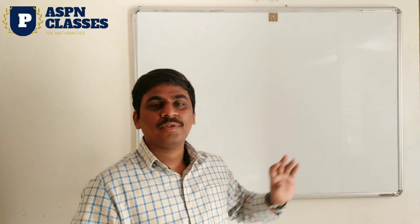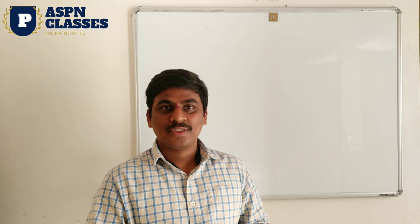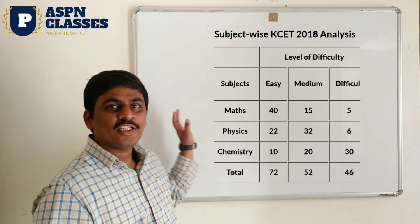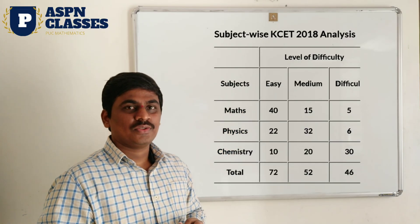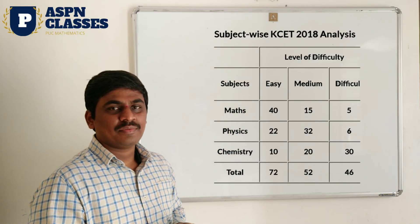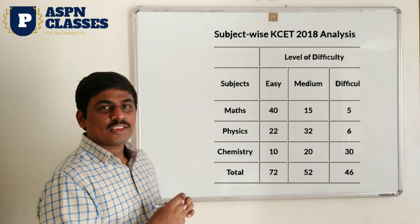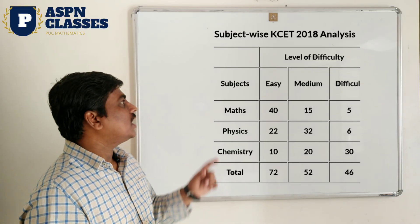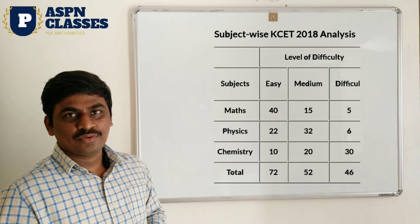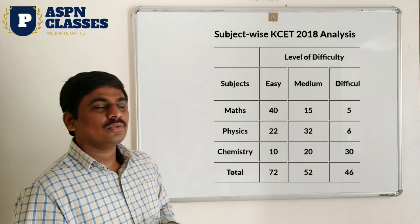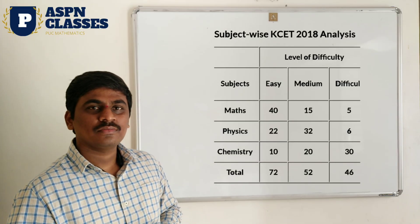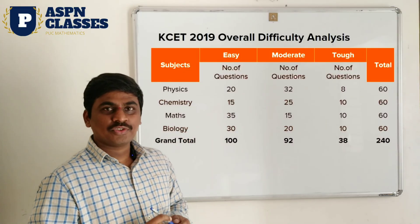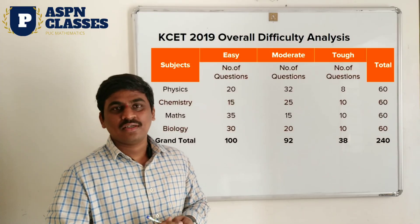Karnataka CET in 2018 and 2019: yes, questions are simple and easy, and some questions are easy and difficult. In 2018, easy questions are about 40, medium questions are about 15, and tough questions are about 5 — this applies to Mathematics, Physics, and Chemistry. In 2019, easy questions are about 35, medium about 10, and tough about 10.